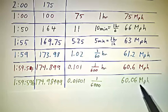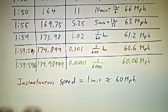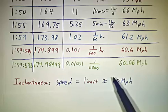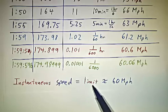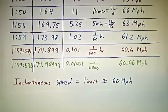Your instantaneous speed is your average speed averaging over shorter and shorter and shorter periods of time. You take the limit as the amount of time you average over goes to zero. And it looks in this example that the limit is 60 miles an hour. Speed limit was 65, you're off the hook.